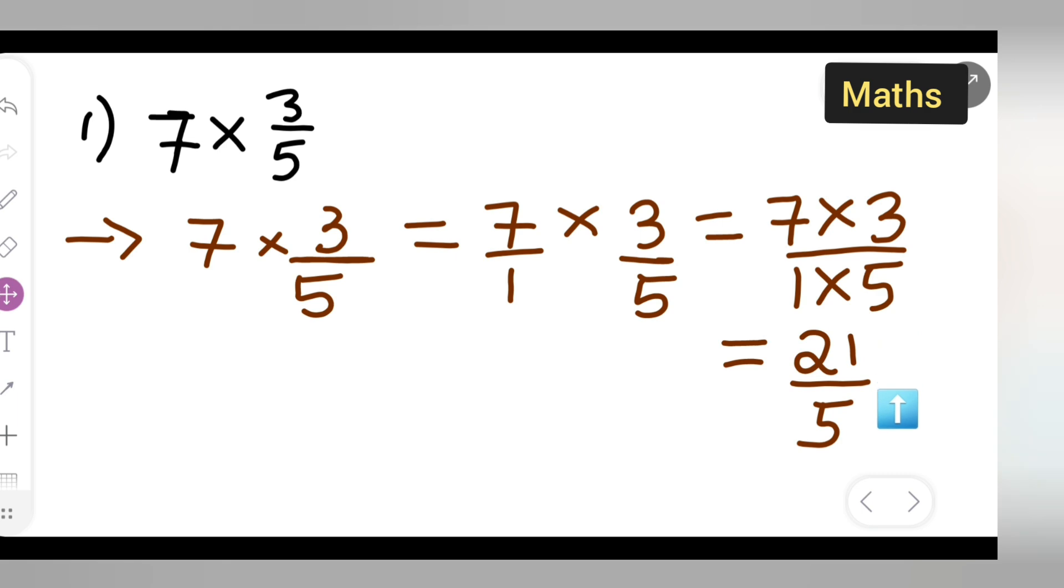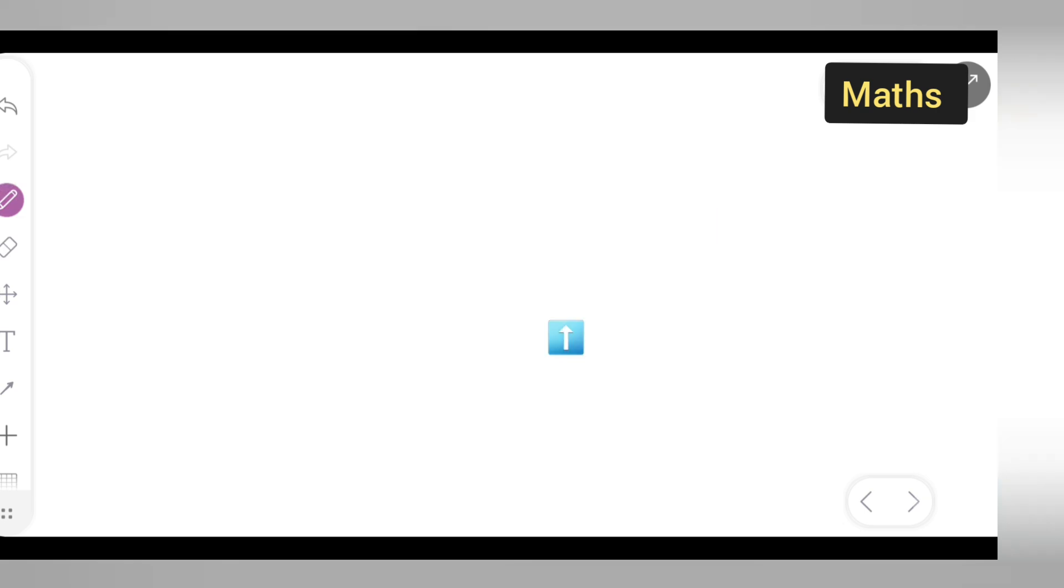Now if you all want to write this in a mixed fraction form. Suppose let us write down here 21 upon 5. Let us write this in the mixed fraction form. How we are going to write this in a mixed fraction form? So let us divide this, 5 divided by 21. Okay.